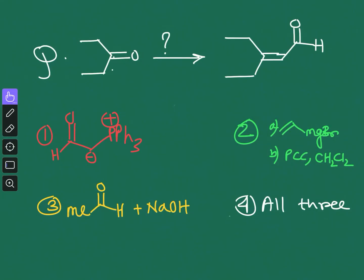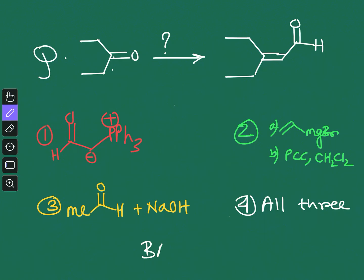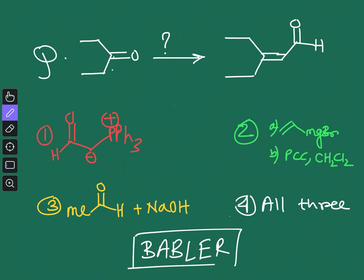Welcome to Chemistry Lover. In this video I am going to discuss one of the very important name reactions — the oxidation reaction of allylic alcohols — and that is the Babler oxidation. This is a rearrangement reaction.